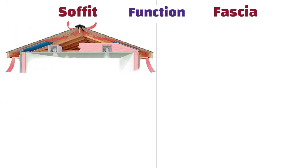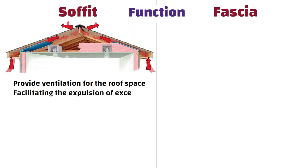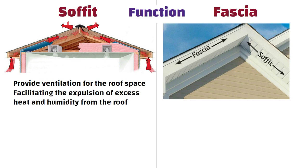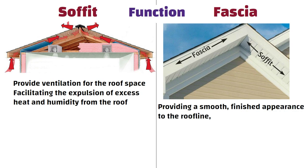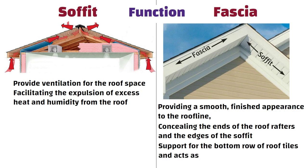Function: The primary function of soffit is to provide ventilation for the roof space. It allows air to circulate and prevents moisture buildup by facilitating the expulsion of excess heat and humidity from the roof. Whereas fascia serves multiple functions. It is primarily responsible for providing a smooth, finished appearance to the roof line, concealing the ends of the roof rafters and the edges of the soffit. It also provides support for the bottom row of roof tiles and acts as a barrier against water intrusion.